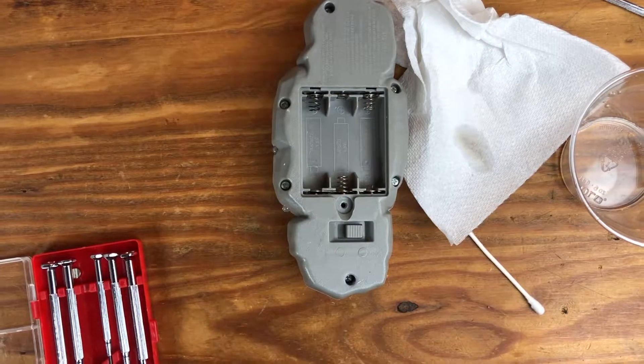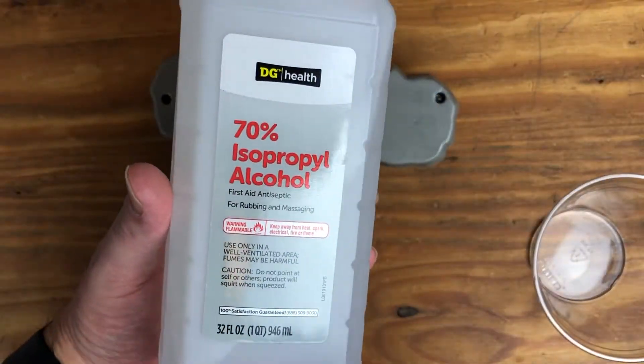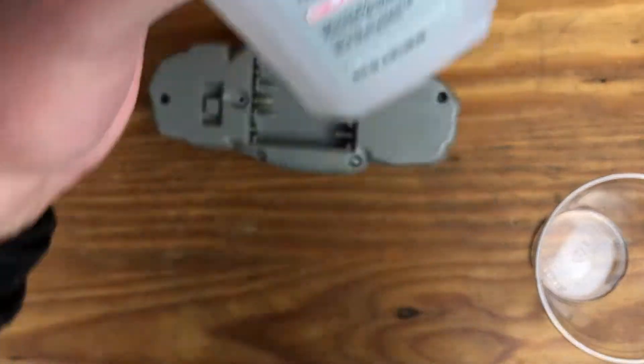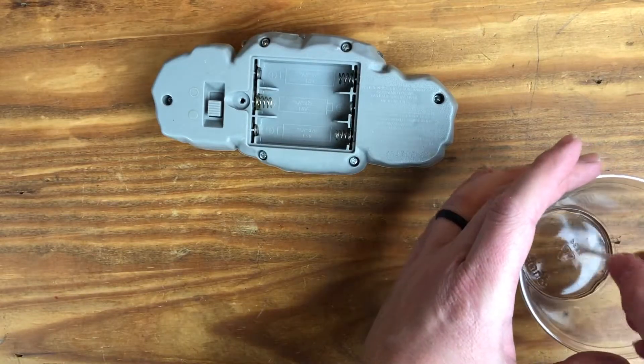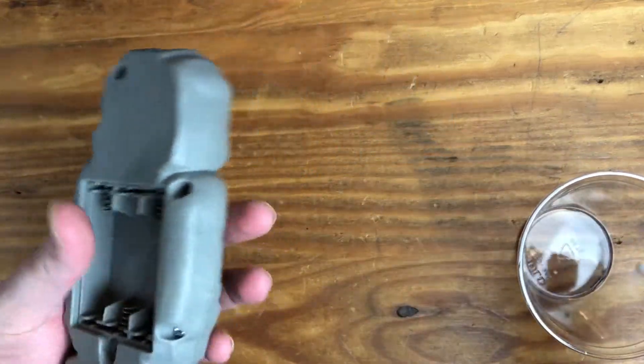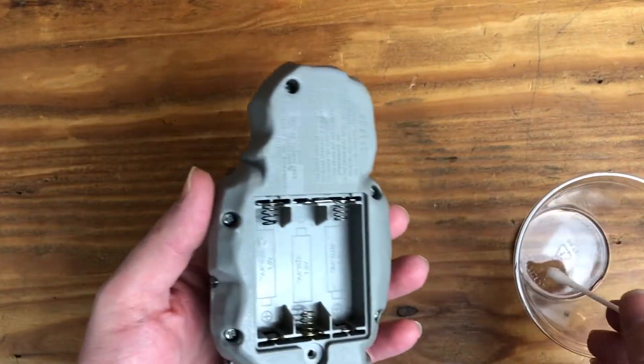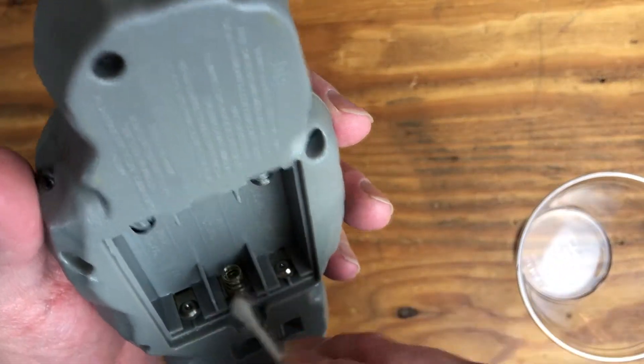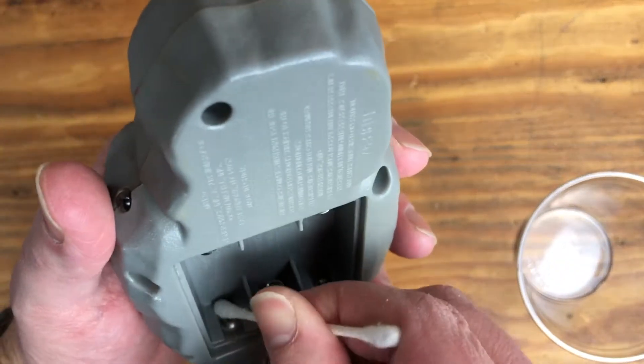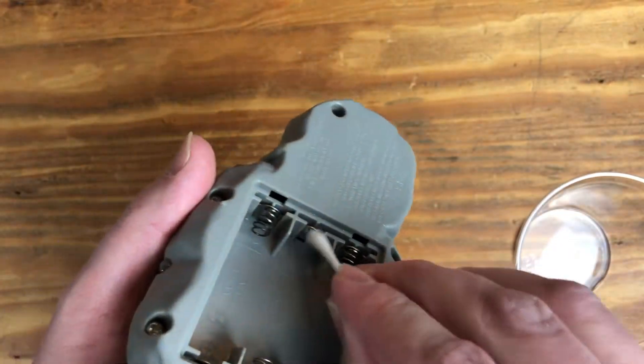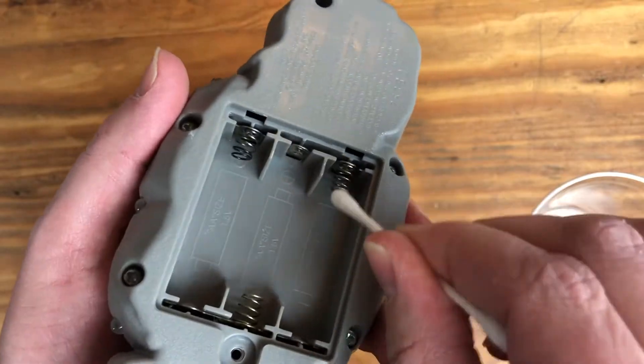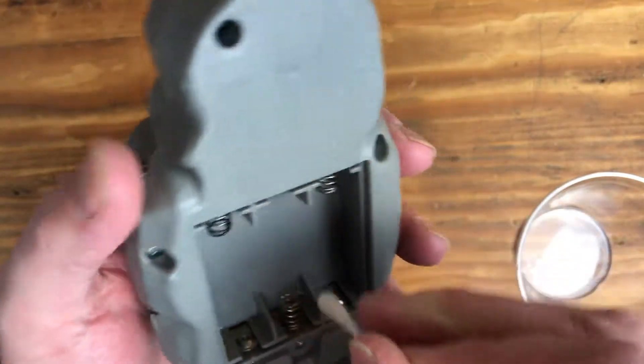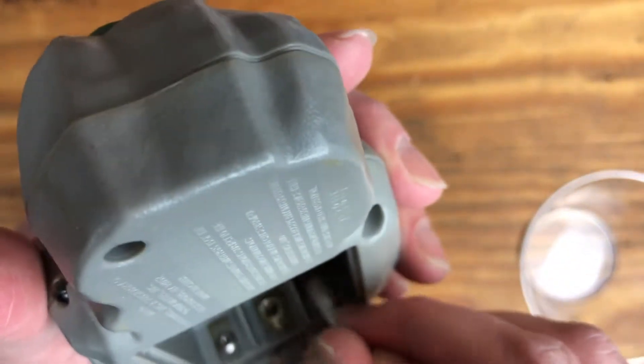Your next step is you want to grab a little bit of rubbing alcohol. Take this and kind of go over the spots you just were. Again, kind of dab that in a q-tip and just kind of run over where you just were. This will help clean off any excess of the vinegar and just kind of get your whatever you have clean.